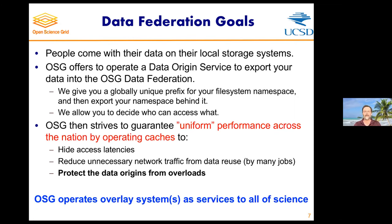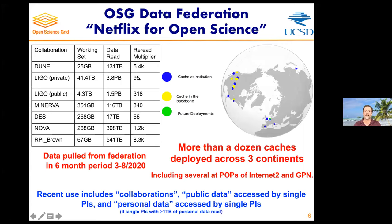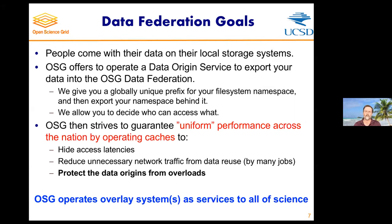First, we want to hide access latencies so that random access to open files is mediated via local caches as much as possible, such that the speed of light doesn't kill performance. Second, we want to reduce unnecessary network traffic from data reuse. We measure a reuse multiplier that ranges from the tens to the thousands — some kinds of data are accessed thousands of times per file.